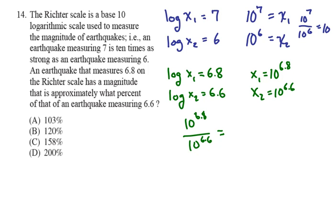And on our calculators, when we divide those two numbers, we're going to get roughly 1.58. Which means that an earthquake measuring 6.8 on the Richter scale is 1.58 times as great as an earthquake measuring 6.6 on the Richter scale. And if we wanted to find this in terms of percent, obviously we would multiply that by 100. And that would give us roughly 158%, or C being the answer.